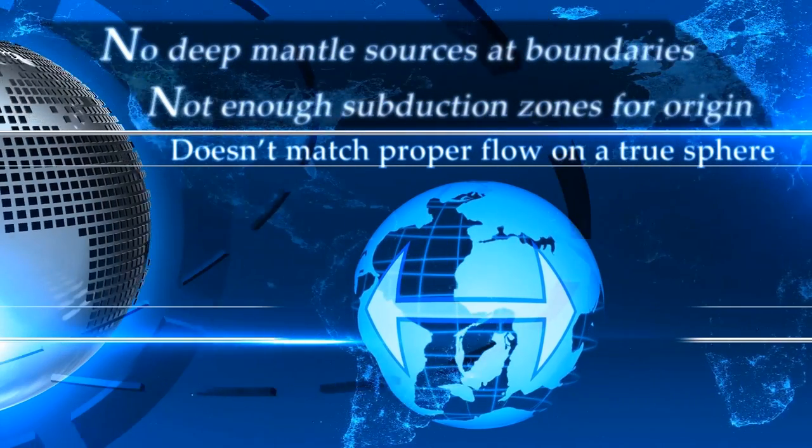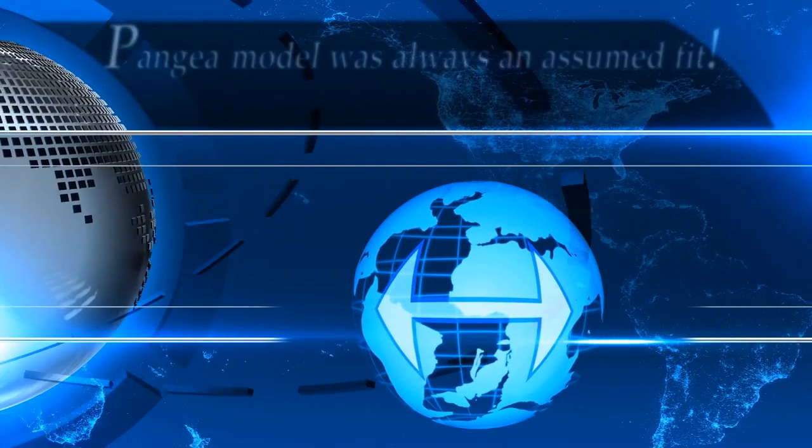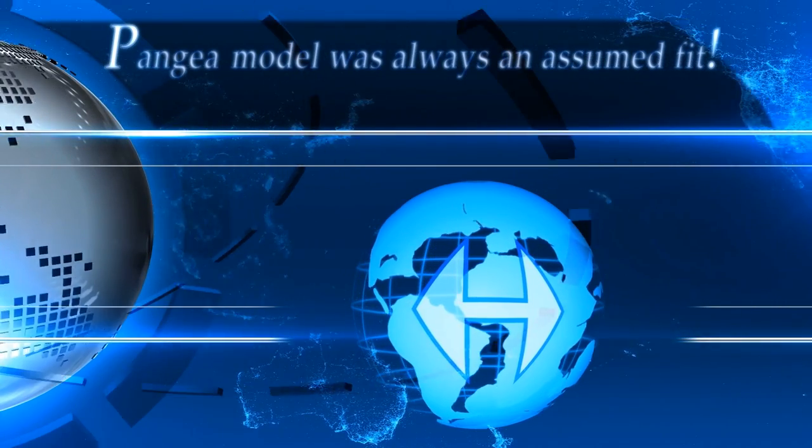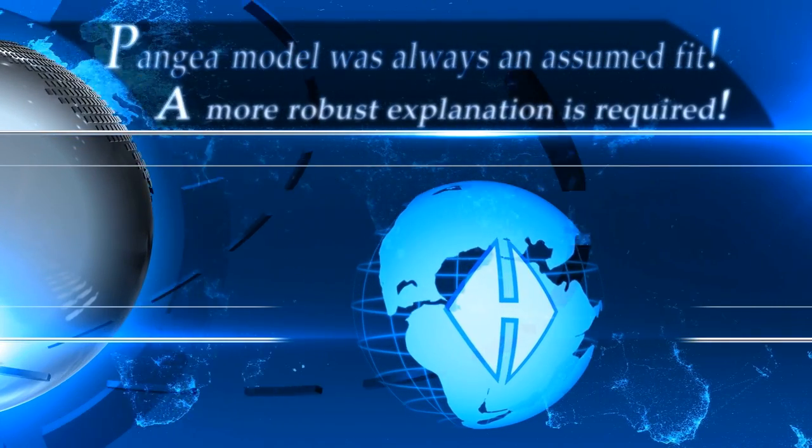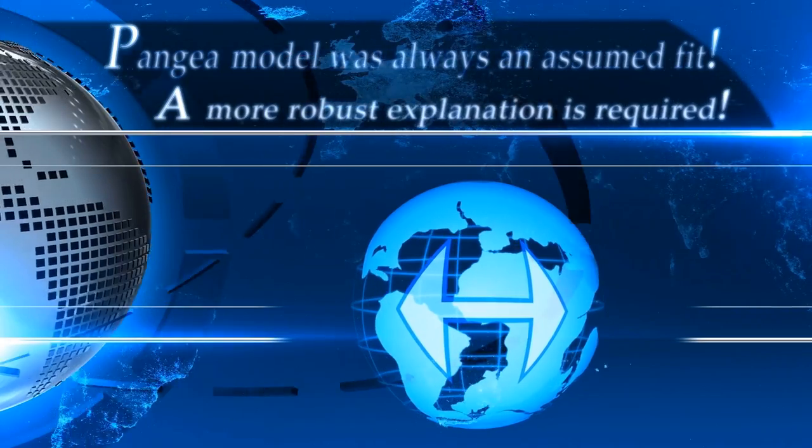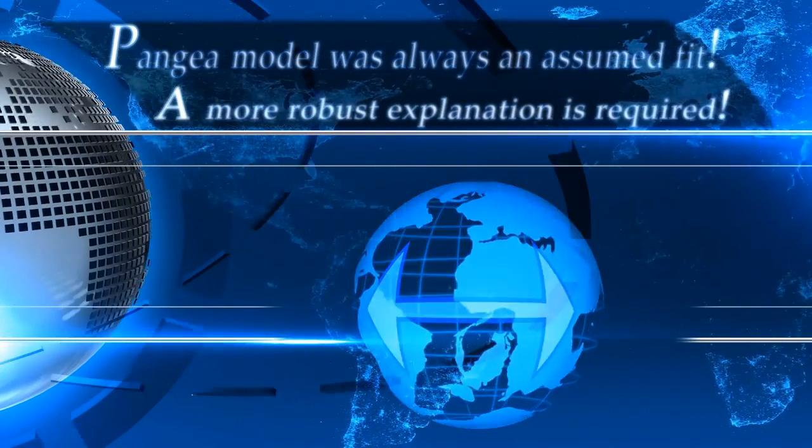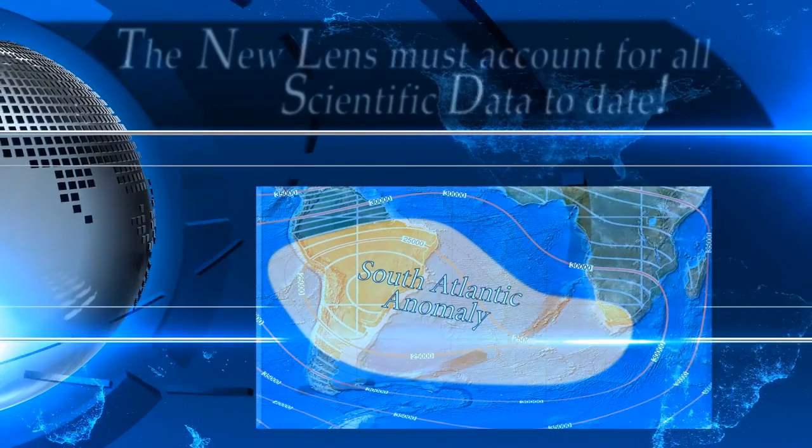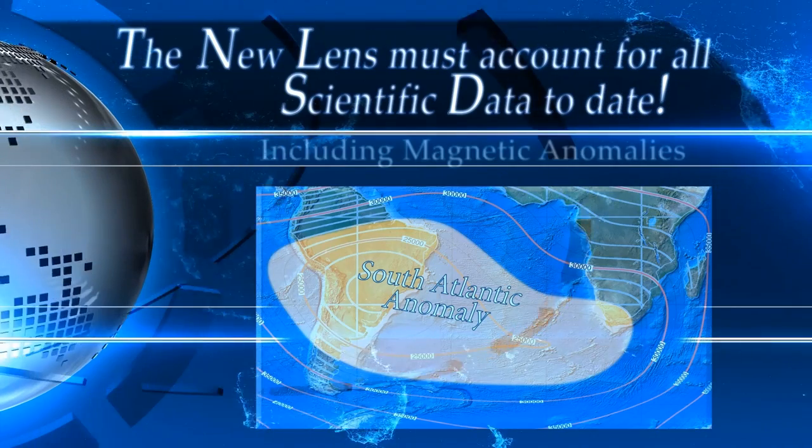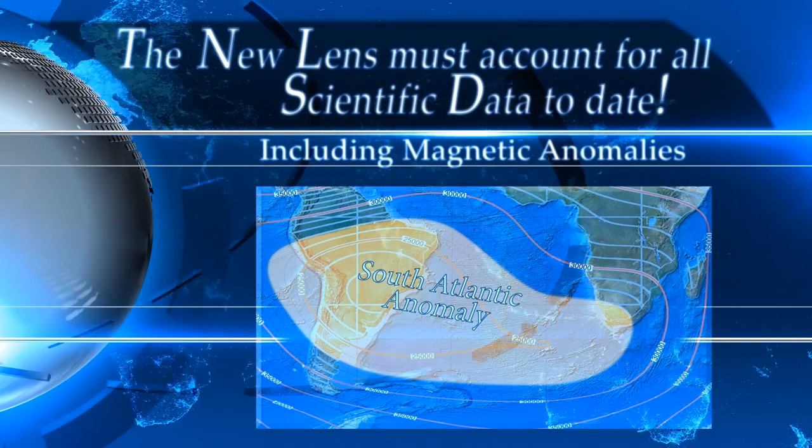Also, the east-west across the Atlantic Ocean doesn't match proper flow on a true sphere. The model was always an assumed fit. So, the pursuit for a more robust explanation is required. The new lens must account for all the scientific data revealed to date, including magnetic anomalies.